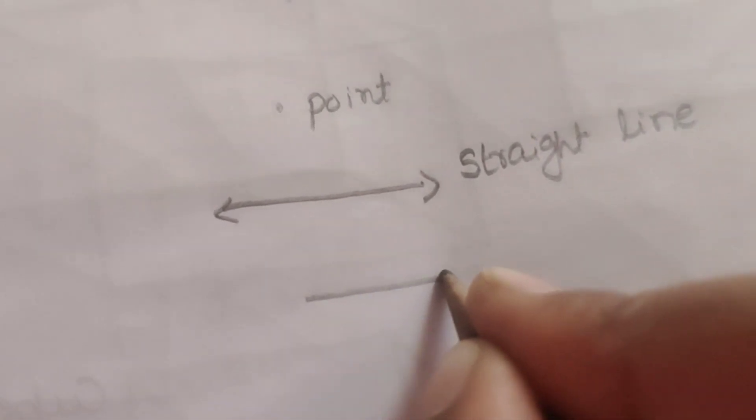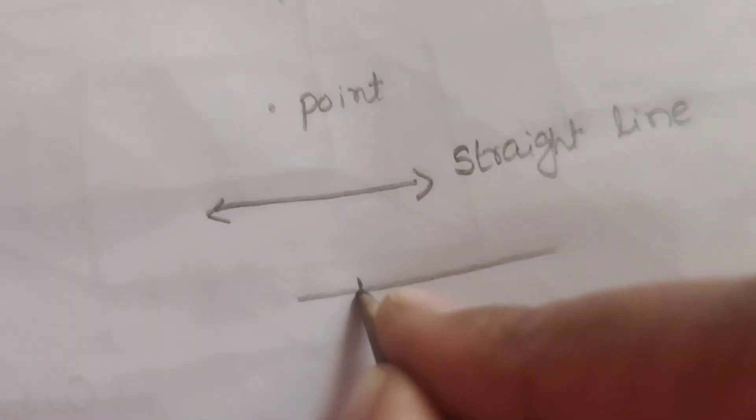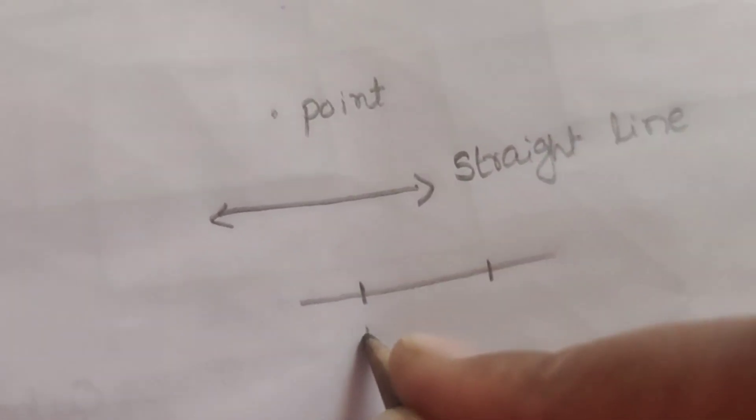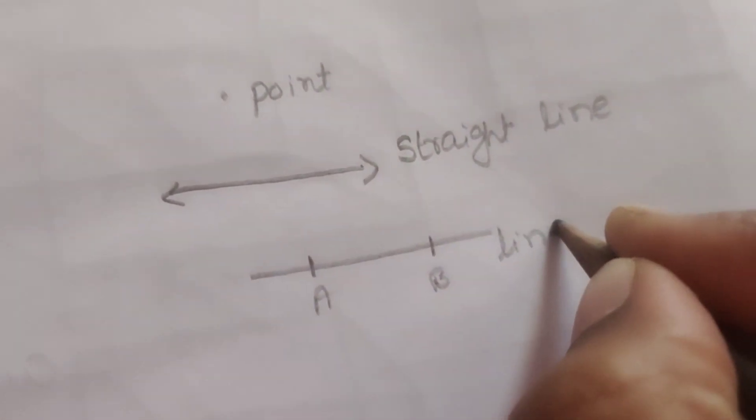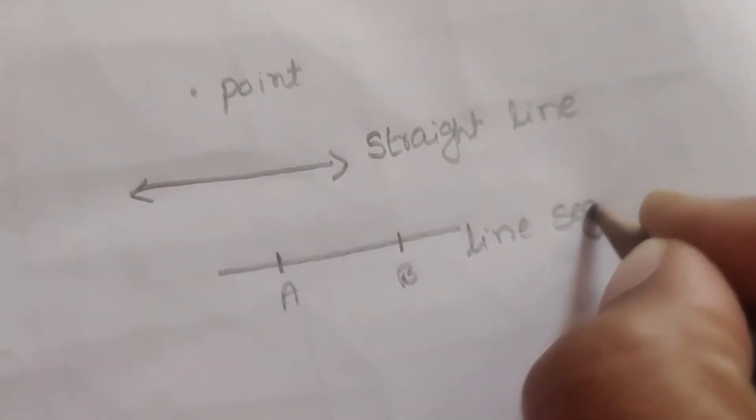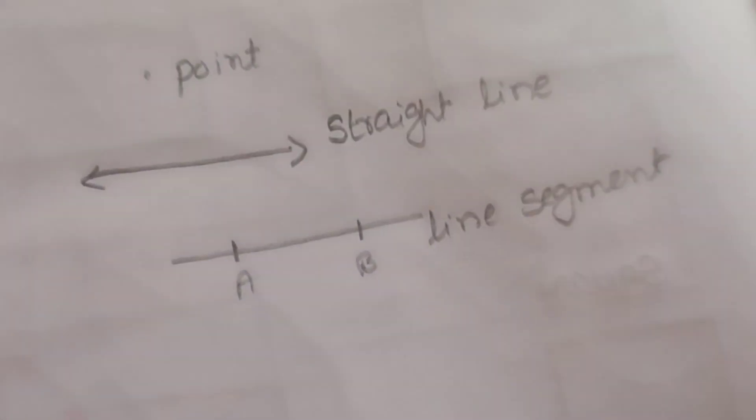Then what is a line segment? Line segment. It has two end points. Now A, B, this is a line segment. Next.